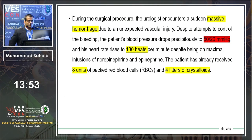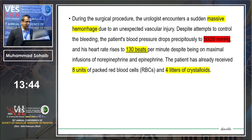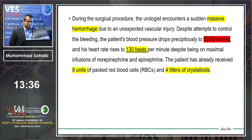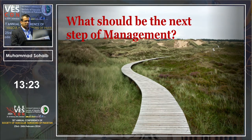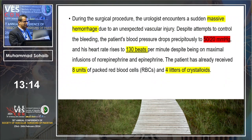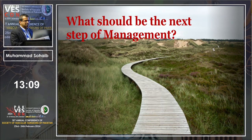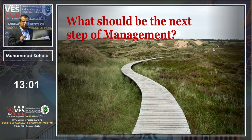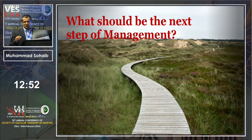During surgery, the urologist encounters sudden massive hemorrhage due to an unexpected vascular injury. Despite attempts to control the bleeding, vascular surgeons are called, and the patient's blood pressure drops to 50/20 with heart rate of 130. The anesthetist has tried vasopressors; the patient has already received 8 units of packed red blood cells and 4 liters of crystalloid. What should be the next step of management?